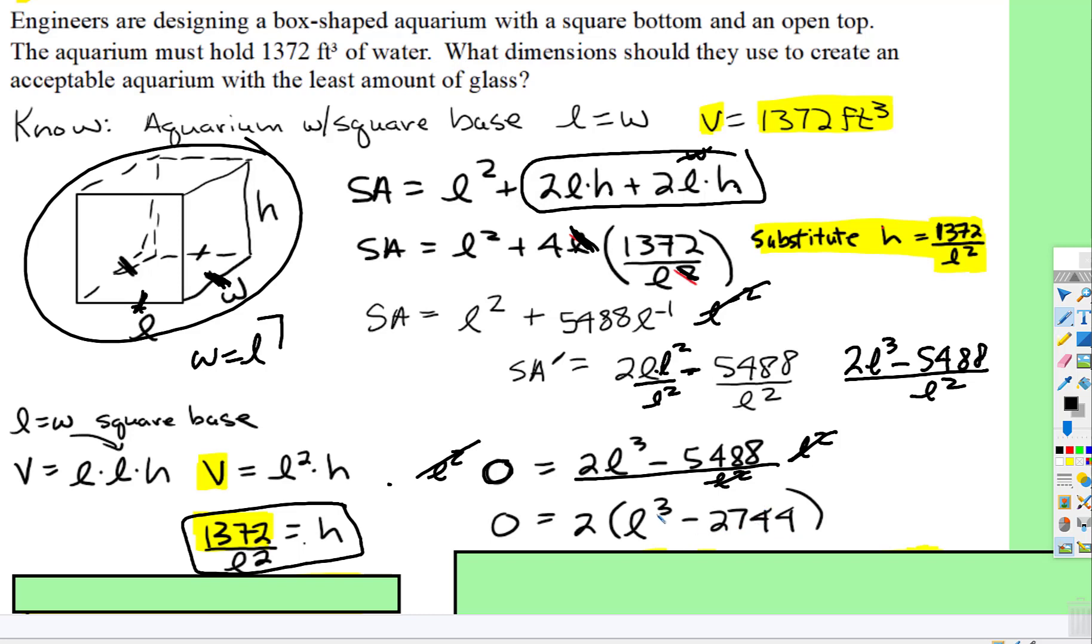Then the L cubed would indicate we need to take the cube root of 2744. And when we do that, the cube root of 2744 is 14 feet.